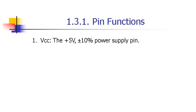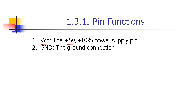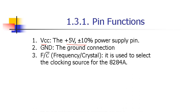Let's discuss the function of each of the 18 pins of this 8284A chip. The VCC pin is an input pin that takes the power supply — 5 volts plus or minus 10 percent — and the ground is connected to the chip. Then there is a pin F/C bar.